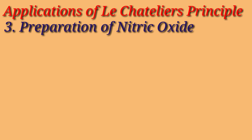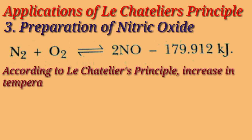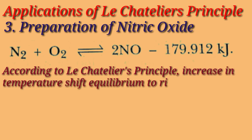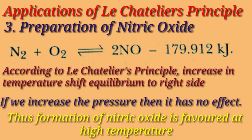Next is the preparation of nitric oxide. This reaction is exothermic. Hence, increase in temperature favors the forward reaction — that is, more amount of nitric oxide is formed if we increase the temperature. But if we increase the pressure, it has no effect, because there are the same number of molecules on both sides — on the reactant side as well as on the product side. Thus, the formation of nitric oxide is favored at high temperature.